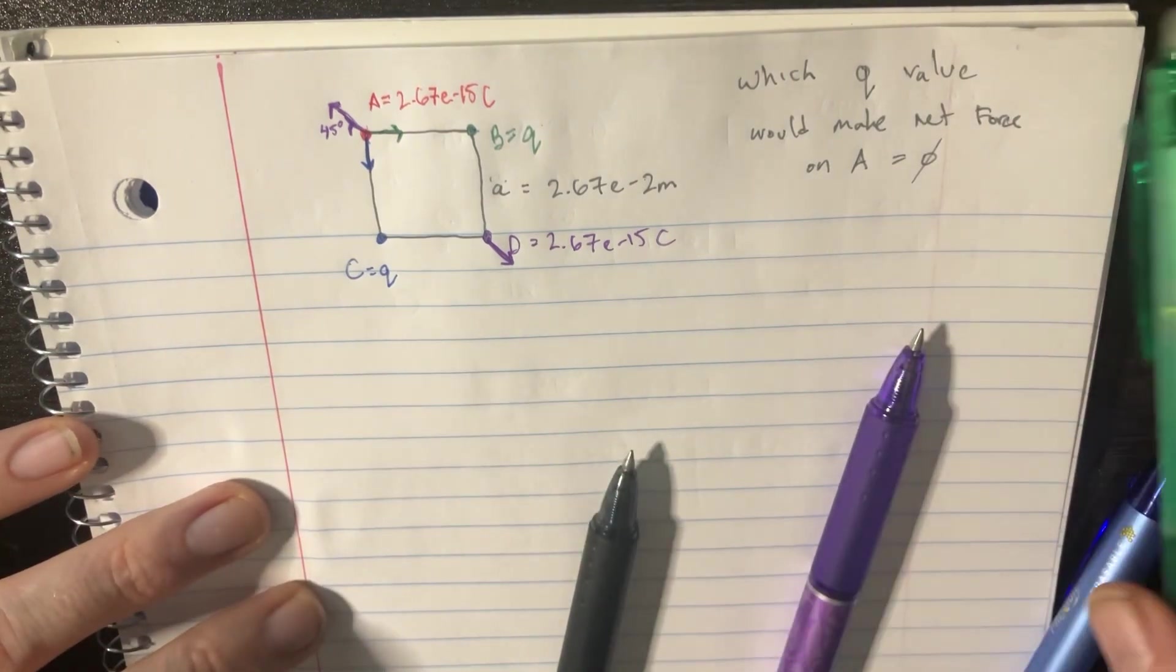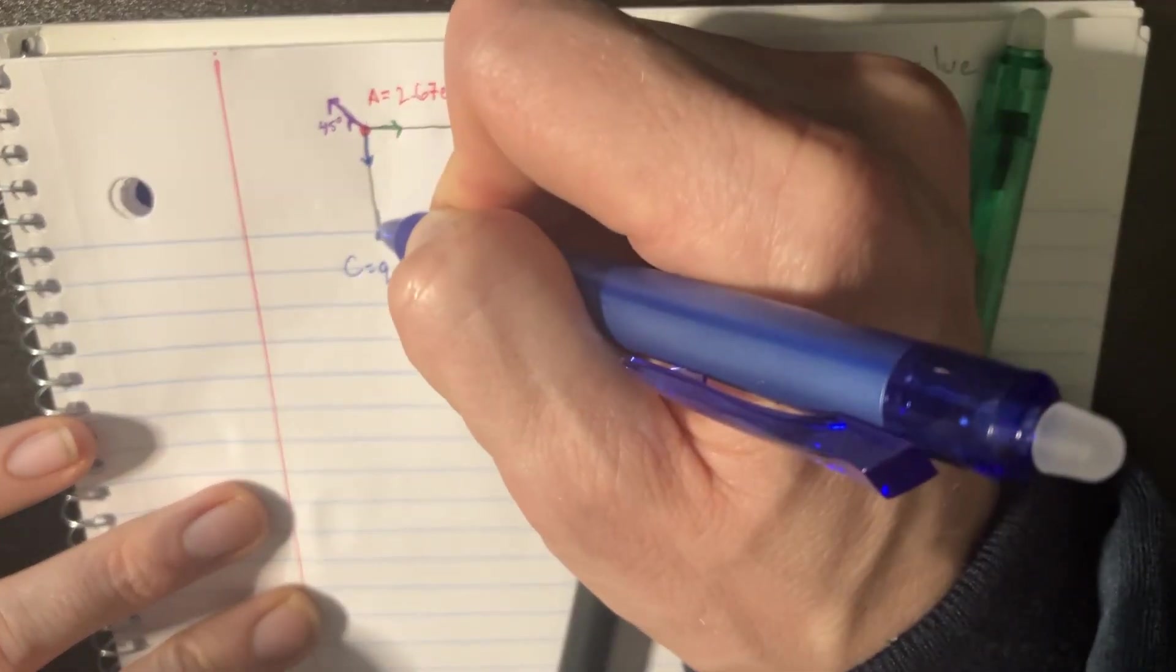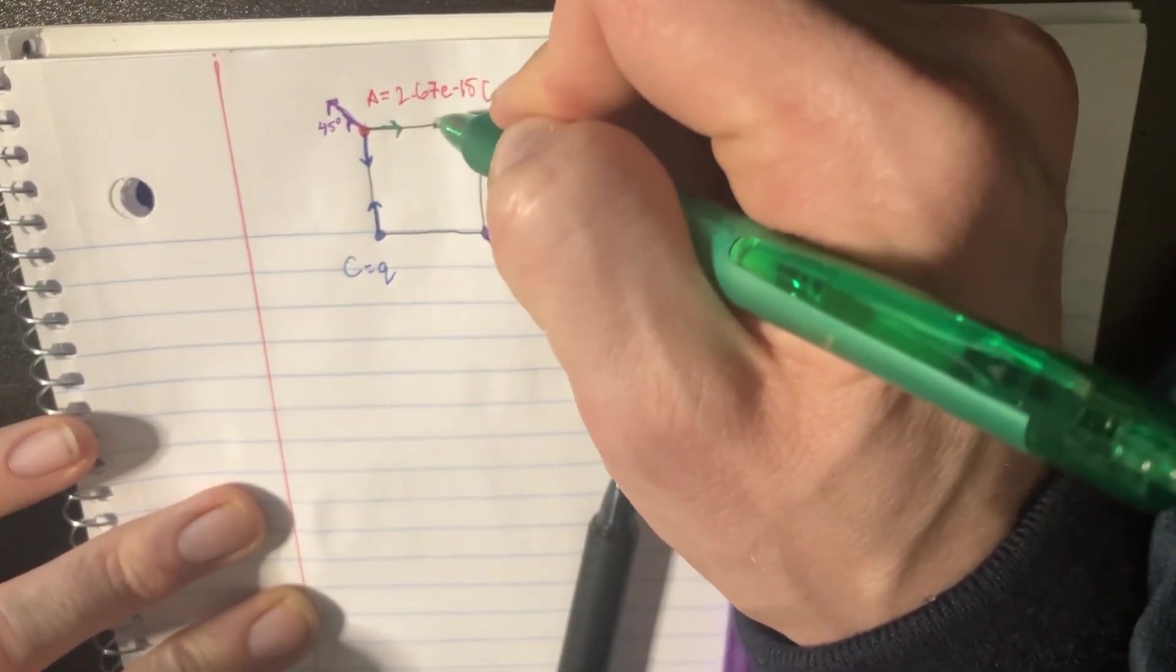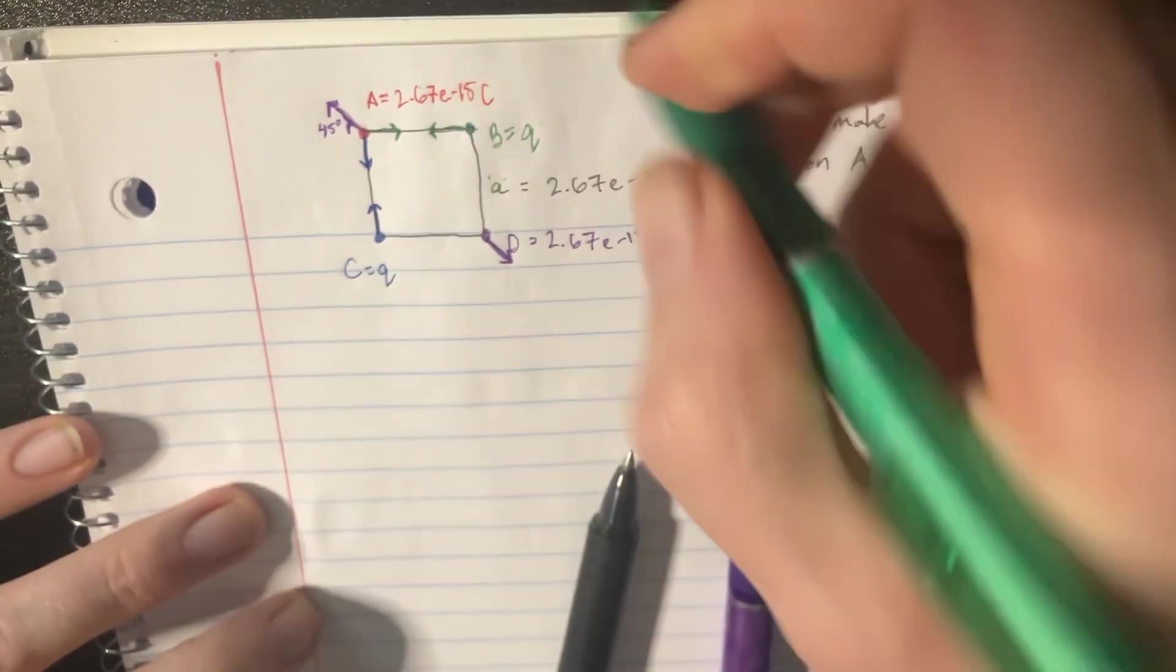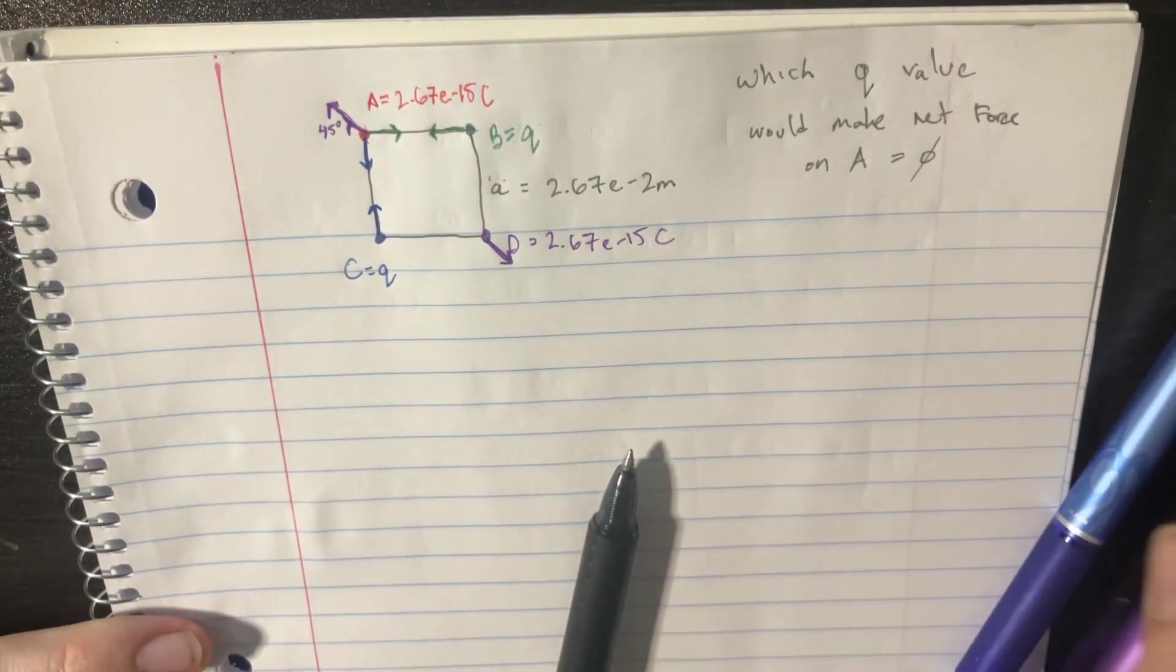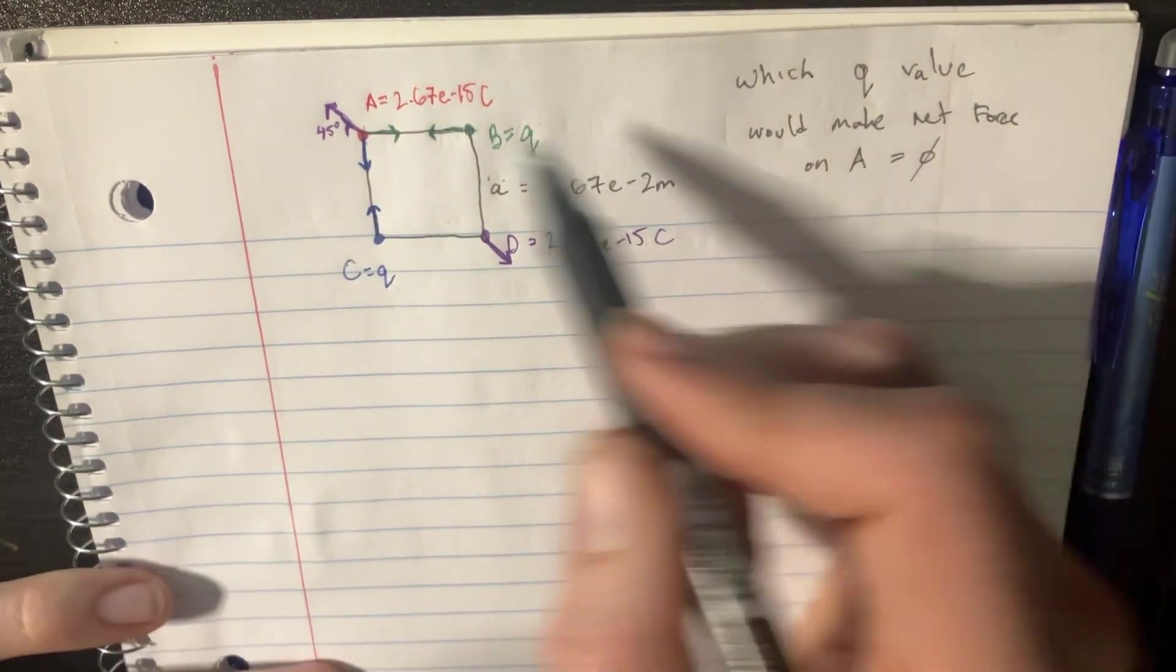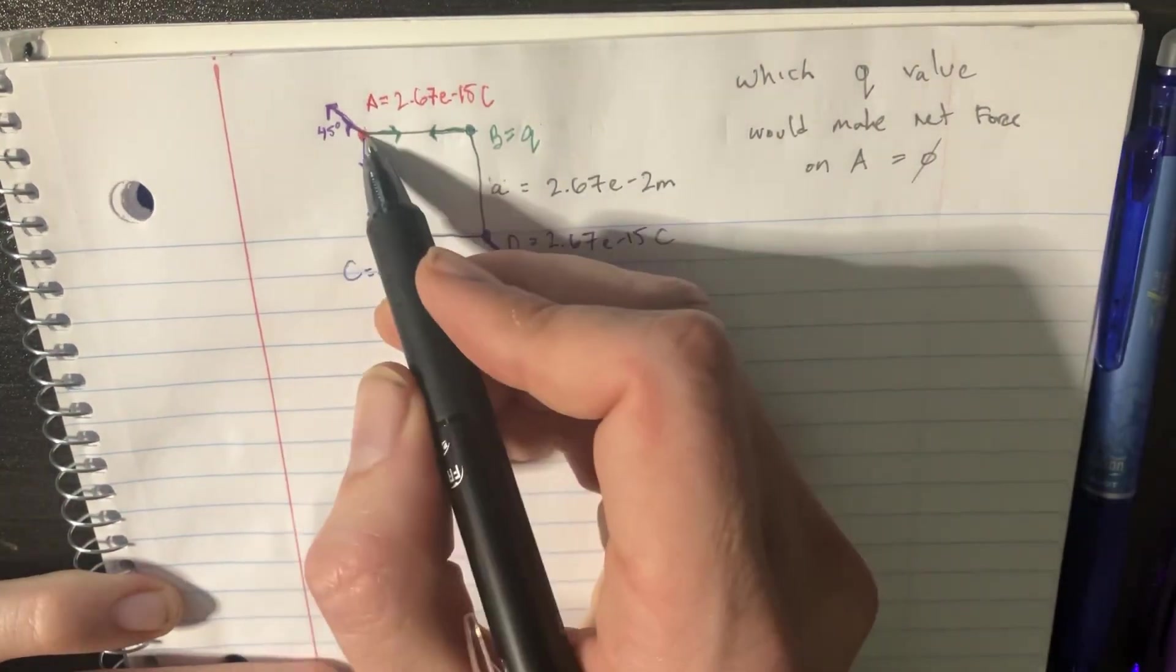And now we have our arrows on that one. Let's just go ahead and add them as well on these, just for fun. And of course, there is going to be more on these other ones as well, but we're not going to deal with that right now. We're just going to try to figure out this one. Net force equal to 0 for A.